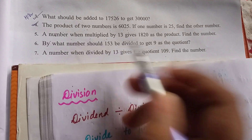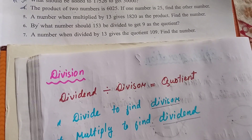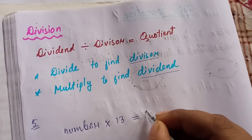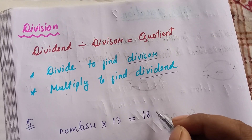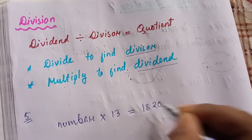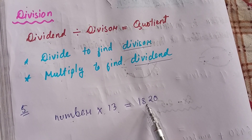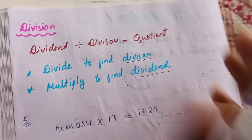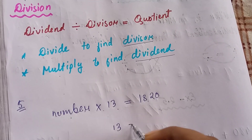A number when multiplied by 13 gives 1,820. It is a multiplication problem, so let us find the unknown number.